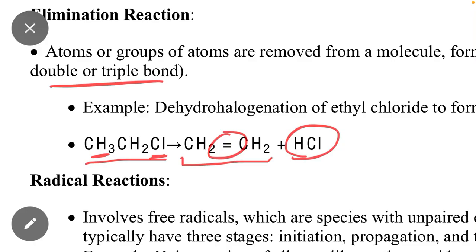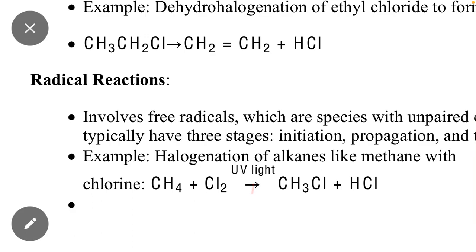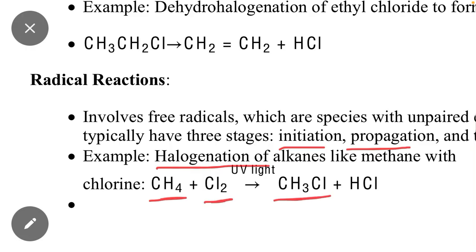The next type is radical reaction, which involves free radicals. This reaction occurs in the presence of sunlight or UV light. It has three stages: initiation, propagation, and termination. For example, in the halogenation of alkanes, when methane reacts with Cl2, the products are CH3Cl and HCl. This type is known as a radical reaction.